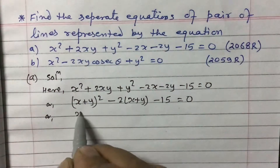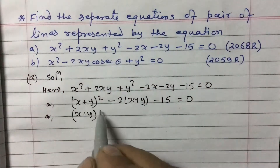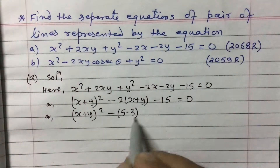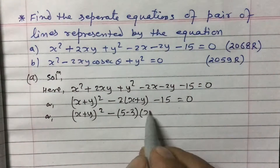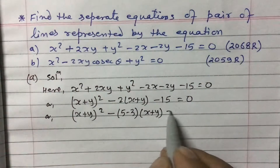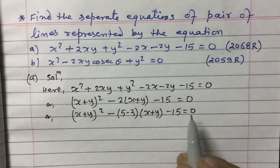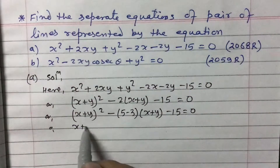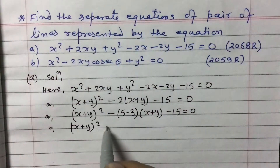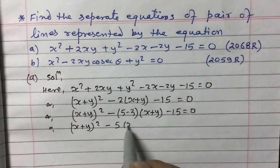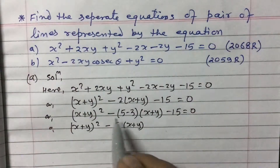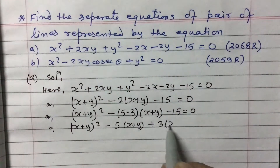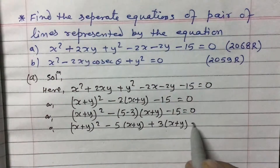So (x + y)² - 2(x + y) - 15 = 0 can be written as (x + y)² - 5(x + y) + 3(x + y) - 15 = 0, splitting the middle term as (5 - 3) to factorize.